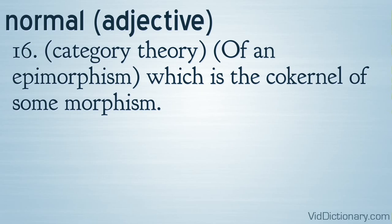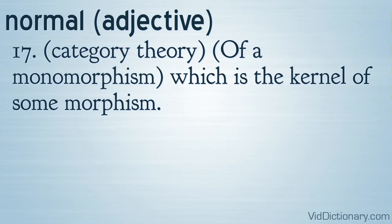Definition 16: Category theory — of an epimorphism, which is the kernel of some morphism. Definition 17: Category theory — of a monomorphism, which is the kernel of some morphism.